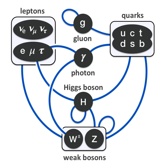Experiments indicate that neutrinos have mass, which the classic standard model did not allow. To accommodate this finding, the classic standard model can be modified to include neutrino mass. If one insists on using only standard model particles, this can be achieved by adding a non-renormalizable interaction of leptons with the Higgs boson. On a fundamental level, such an interaction emerges in the seesaw mechanism where heavy right-handed neutrinos are added to the theory. This is natural in the left-right symmetric extension of the standard model and in certain grand unified theories. As long as new physics appears below or around 10^14 GeV, the neutrino masses can be of the right order of magnitude.